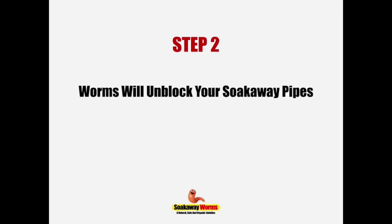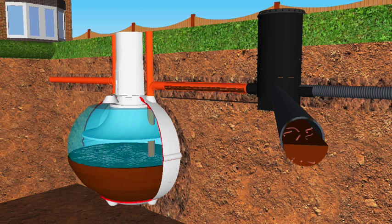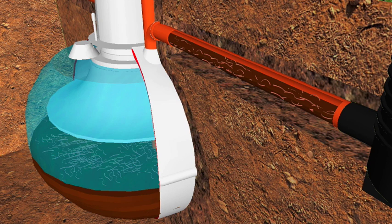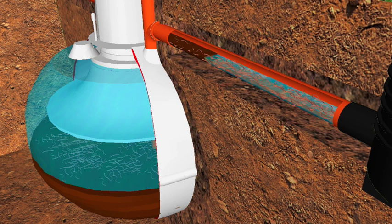Step two: the worms will very quickly start to eat and digest the sludge, fat, and grease that are blocking your soak away pipes. As the worms eat and remove the sludge, the soak away pipes will allow the wastewater to flow freely once again.